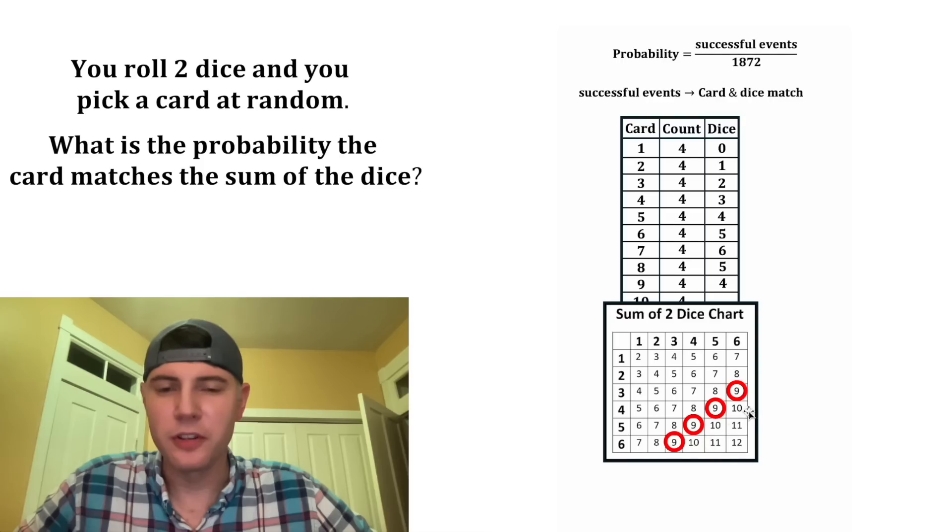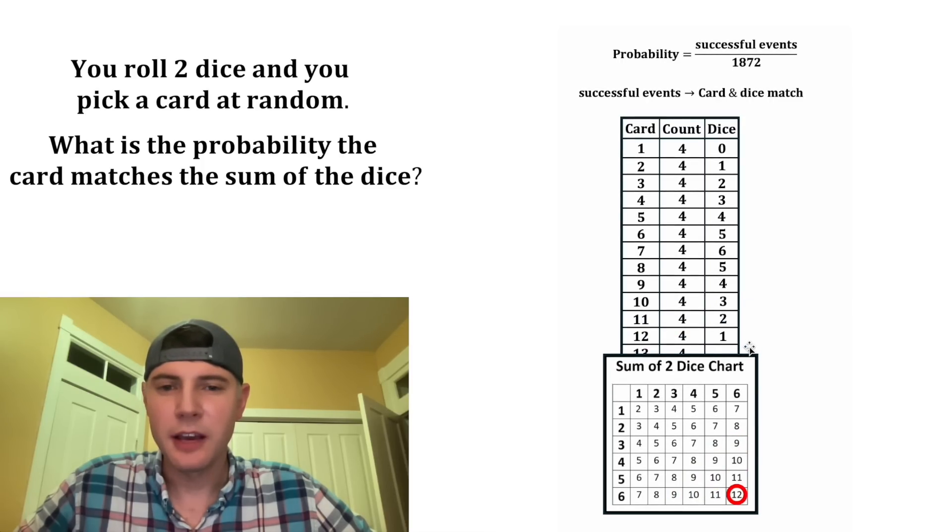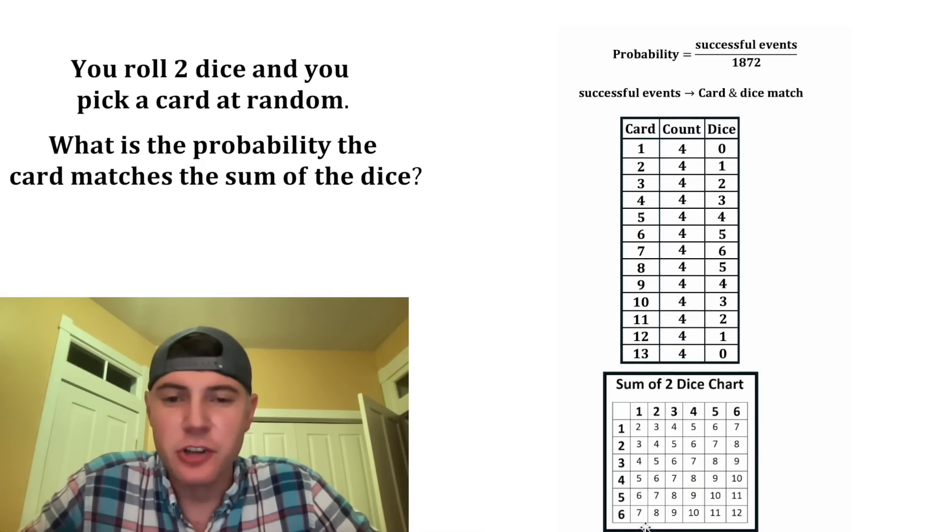5 for the 8. 4 for the 9. 3 for the 10. 2 for the 11. And 1 for the 12. And then for the 13, there's no possible roll that'll give us a 13. So we put a 0 there.